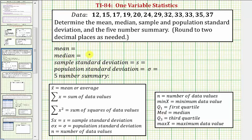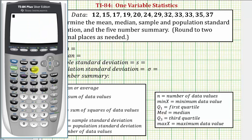The first step is to enter the data. To do this, we press the stat key, and then enter. We'll enter the data in L1. So we first want to clear L1 by going to the top of the column, press clear, and then enter. And now we'll enter all the data values: 12, enter, 15, enter, and so on.